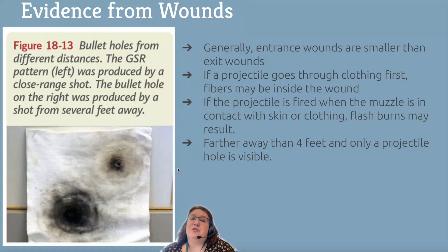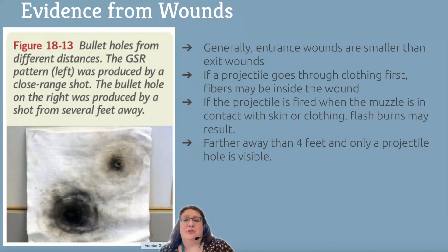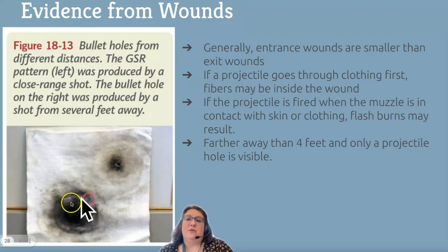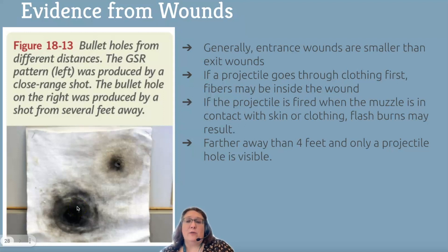Evidence from wounds can also be really important. Generally, entrance wounds are smaller than exit wounds. If a projectile goes through clothing first, there may be fibers from the clothing in the wound itself. If the projectile is fired when the muzzle is against the skin or clothing, you would get flash burns on the clothing. For example, this here shows where the muzzle was right up against a t-shirt when they fired the gun — you can see the flash burns. Farther away than four feet, only a projectile hole would be visible.